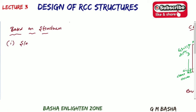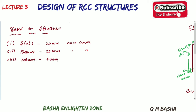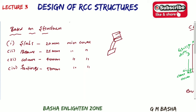Minimum cover by structural member type: Slab — 20mm, Beam — 25mm, Column — 40mm, Footing — 50mm. Notice the step-by-step increase from slab to footing. These are very important values to remember for design.